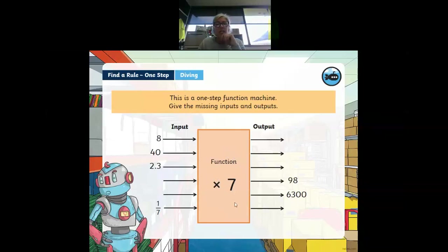In this case today it's multiplying by seven if we're going from left to right. If we're going from right to left then it'll be dividing by seven. Let's have a go at seeing how this works.